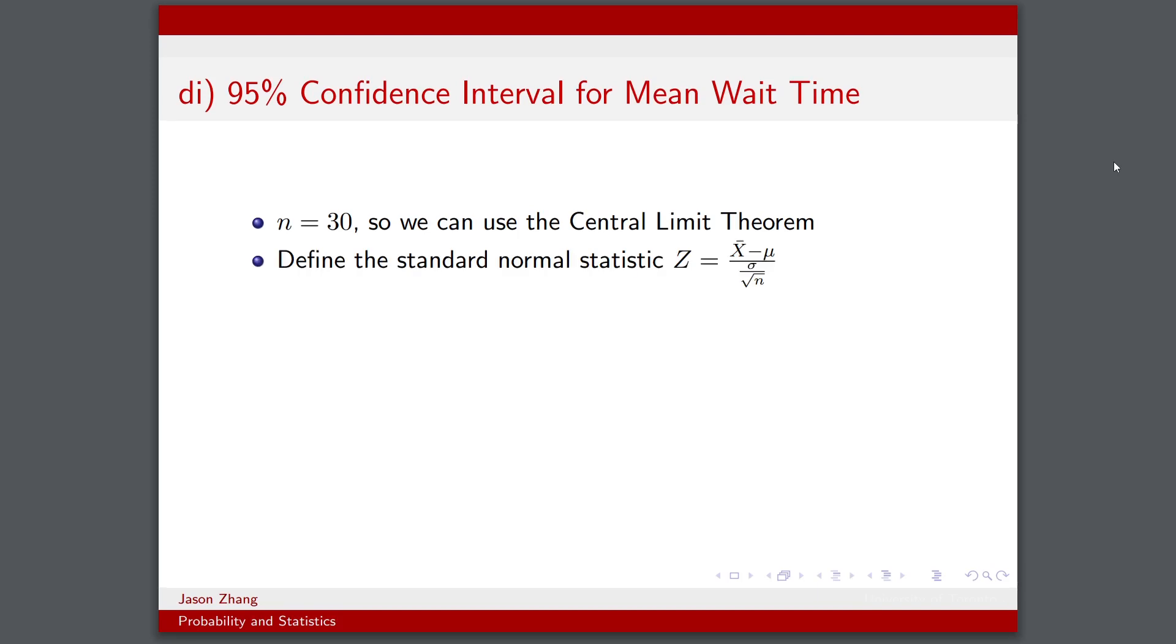So we can define a standard normal statistic Z = (x̄ - μ)/(σ/√n). And as n approaches infinity, this statistic should go to a standard normal distribution. We want to find the variance of our distribution. Recall that the mean wait time is described by the exponential distribution with parameter β. In this case, we're given that the mean wait time is 10, so β would be 10 minutes.